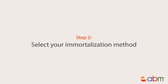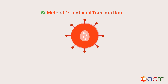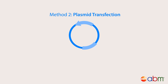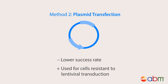There are two methods of performing the immortalization itself. The preferred method is through lentiviral transduction, as this will confidently integrate the DNA into the host cell and stably express the gene of interest. The other method is through plasmid transfection, which, although it has a lower success rate, may work for cells that are resistant to lentiviral transductions.